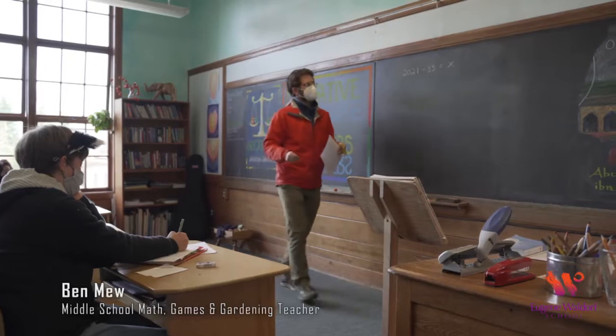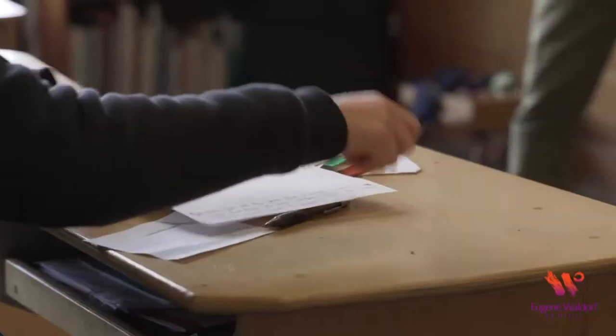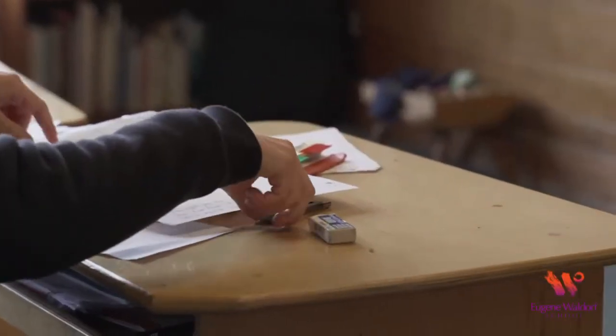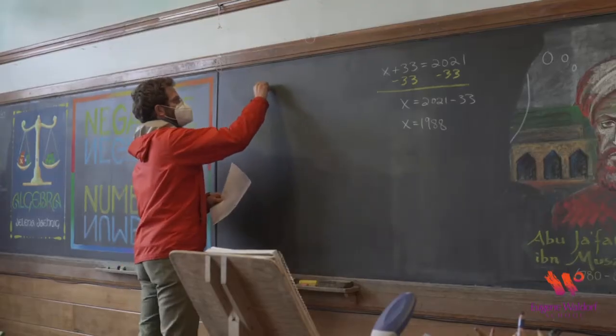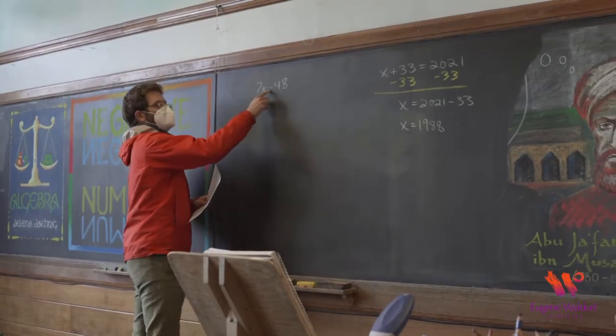In seventh grade we focus a lot on the theme of ratio, approaching it from a lot of different perspectives — word problems about rates and rate of change, cost per pound, that sort of thing. Then in eighth grade we switch more to algebra and really try to integrate algebra with geometry, getting familiar with equations in general and how to use variables.